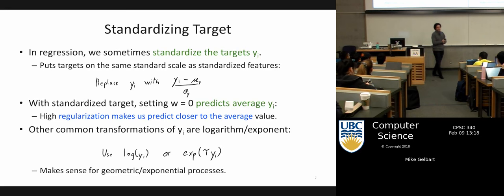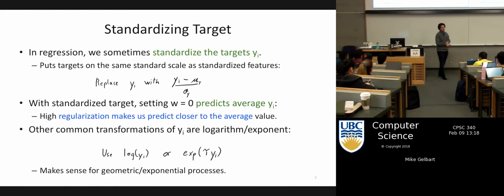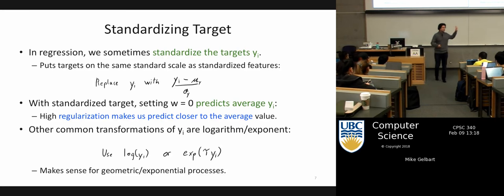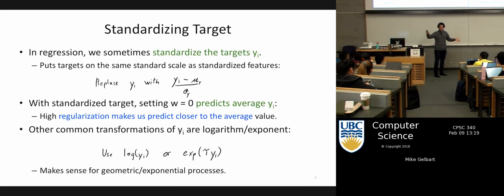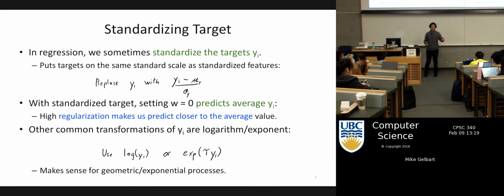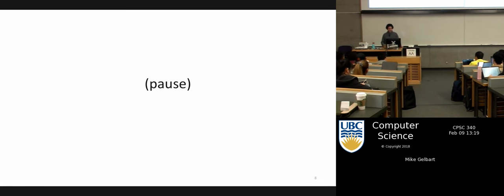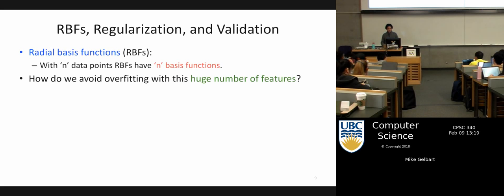There are other transformations you can do beyond just shifting and scaling — common things include taking the log or square root, especially if you have something in a certain range and think it should be in another range. These transformations can have different domain-specific uses but can be quite important. These non-linear transformations mean that if you're using linear regression but the actual trend isn't linear, you could undo that shape by transforming and then use linear regression.